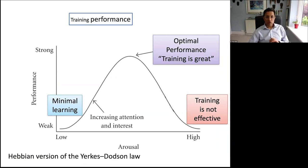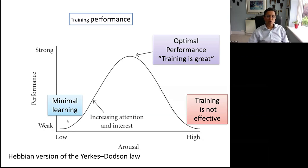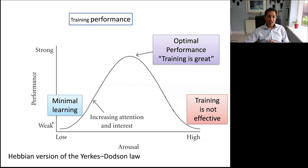The Yerkes-Dodson rule is useful for thinking about performance and learning in theatre. At one extreme, minimal learning — the trainee just writes notes and doesn't pick anything up. At the peak, training is great, they're learning something new each week. At the other end, training is terrible — they make the same mistakes week in, week out. So how do we get someone from minimal learning all the way up to optimal?